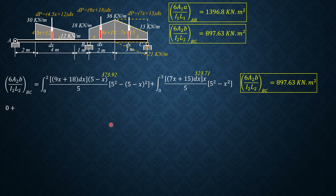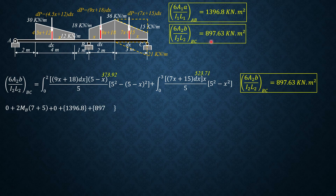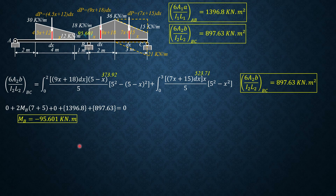Note that moment at A is 0 and moment at C is 0, as supports are unyielding. Applying the three-moment equation: 2MB × (7 + 5) plus 0 (since MC = 0) plus 1396.8 plus 893.63 equals 0. Solving for MB, the internal moment at B is equal to negative 95.601 kN·m. We then apply this at B to solve for reactions at A and at B.